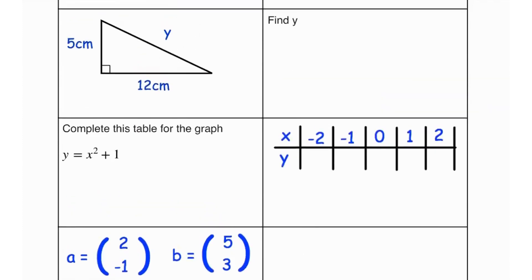Next question says find the value of y. So we have a right angle triangle. They have given us the opposite, they have given us the adjacent and they want us to find the hypotenuse. Hypotenuse is always the diagonal in a right angle triangle.